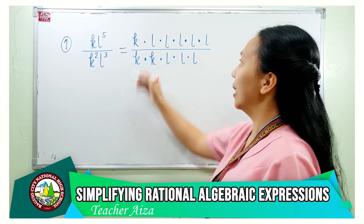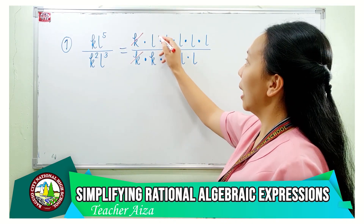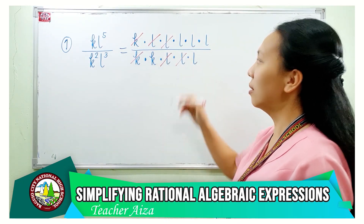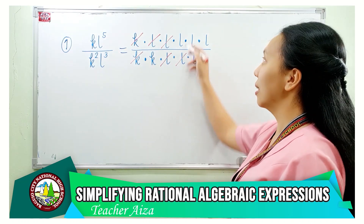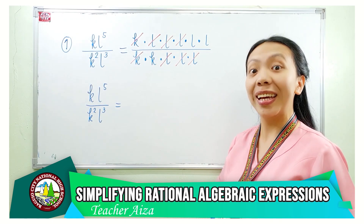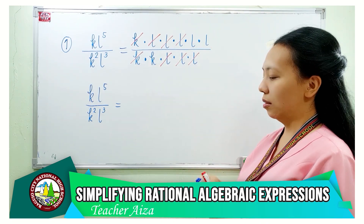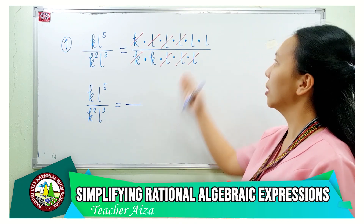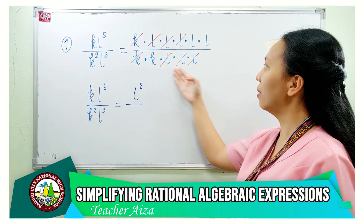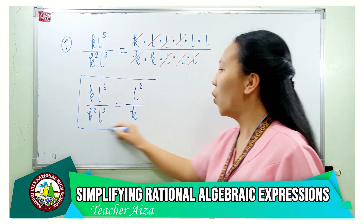Second step: divide out pairs of common factors, one from the numerator and the other from the denominator. For the final answer, we multiply all the remaining factors in the numerator and do the same in the denominator. For the final numerator, we have l times l times l — that would be l cubed. In the denominator, we have k. The simplified form, therefore, is l cubed over k.